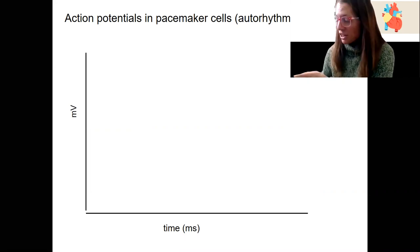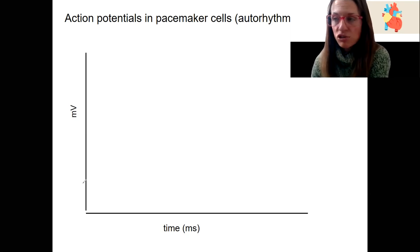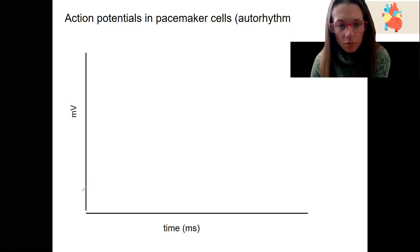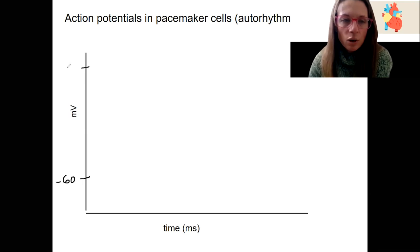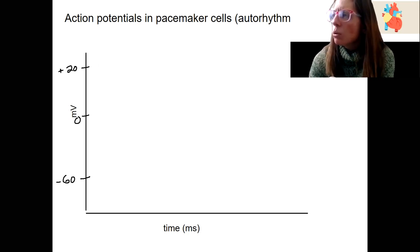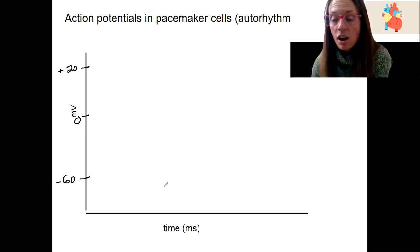So the first thing to start with — I usually start when I draw these action potentials with some of these values over here. I'm going to start with minus 60 over here. We are going to be a little bit less negative, go up to 20, and then zero somewhere like here. So we are starting a little bit higher. You may ask: what is the resting membrane potential?